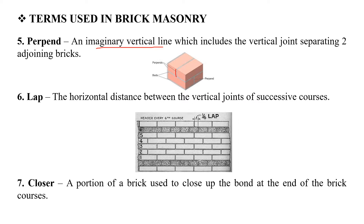Next is the Lap. This is the horizontal distance between the vertical joints of successive courses. If we take two bricks and a vertical joint, the horizontal distance between the vertical joints of those successive courses is the Lap.